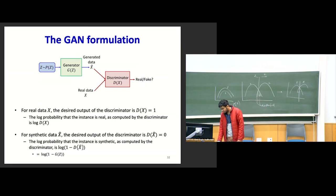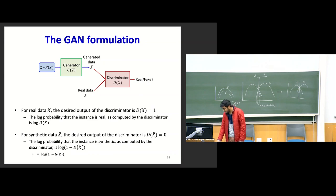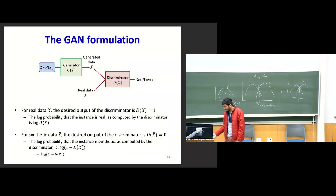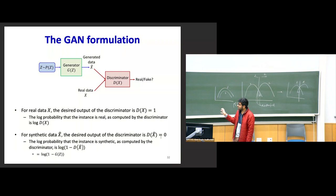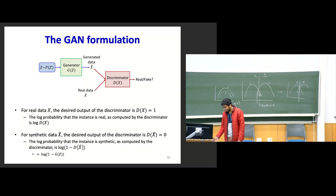For real data x, the desired output of the discriminator D(x) is one — the log probability is log D(x). For synthetic data x̂, the desired output of the discriminator D(x̂) is zero during the discriminator training step, and the corresponding log probability is log(1 − D(G(z))). This is the first step in training GANs.